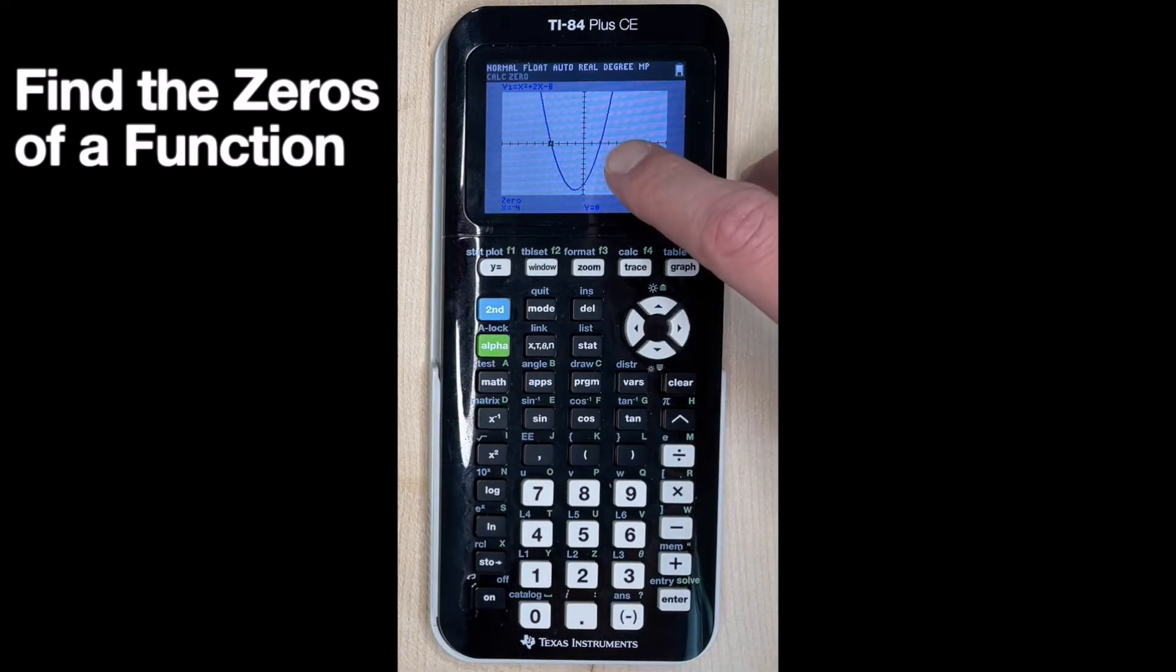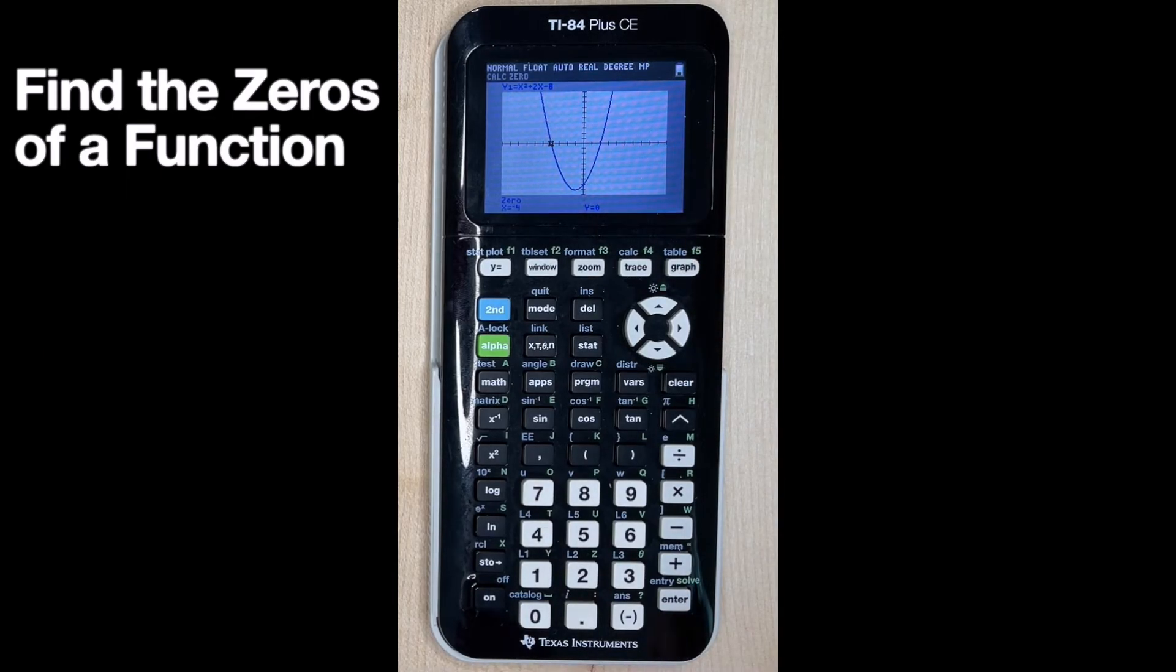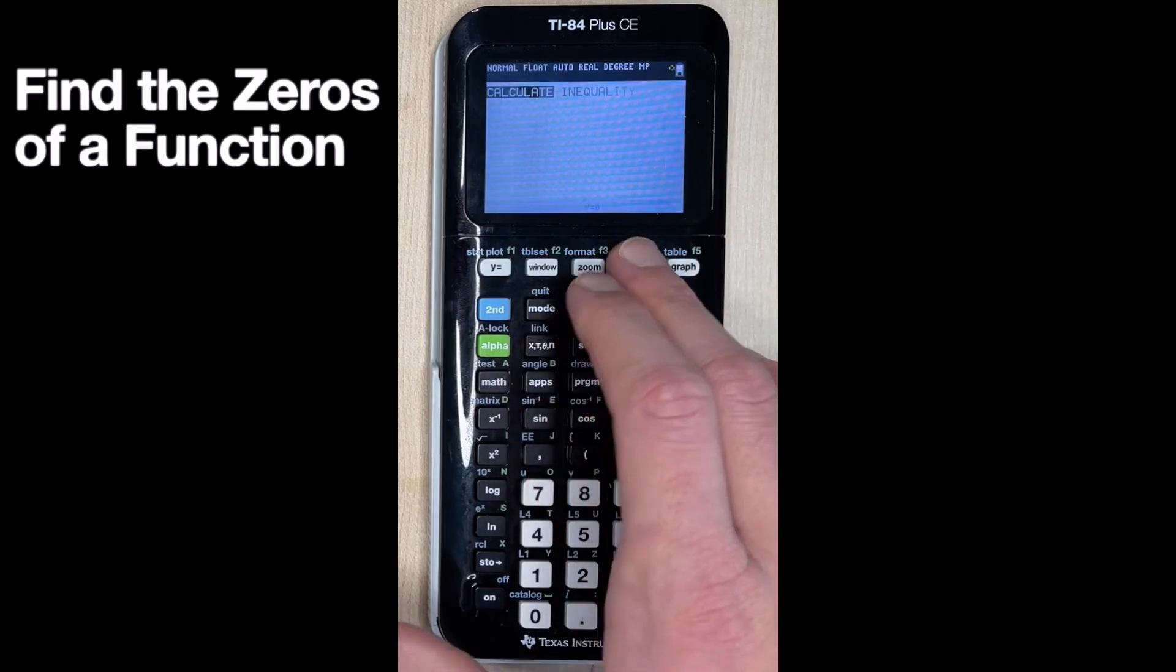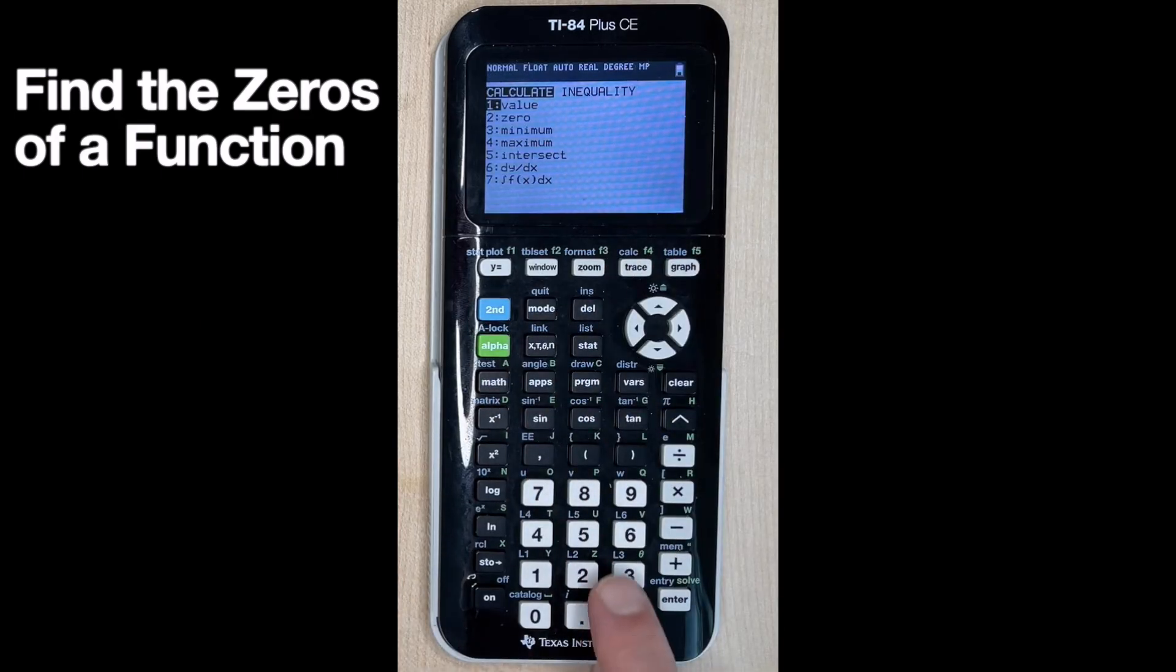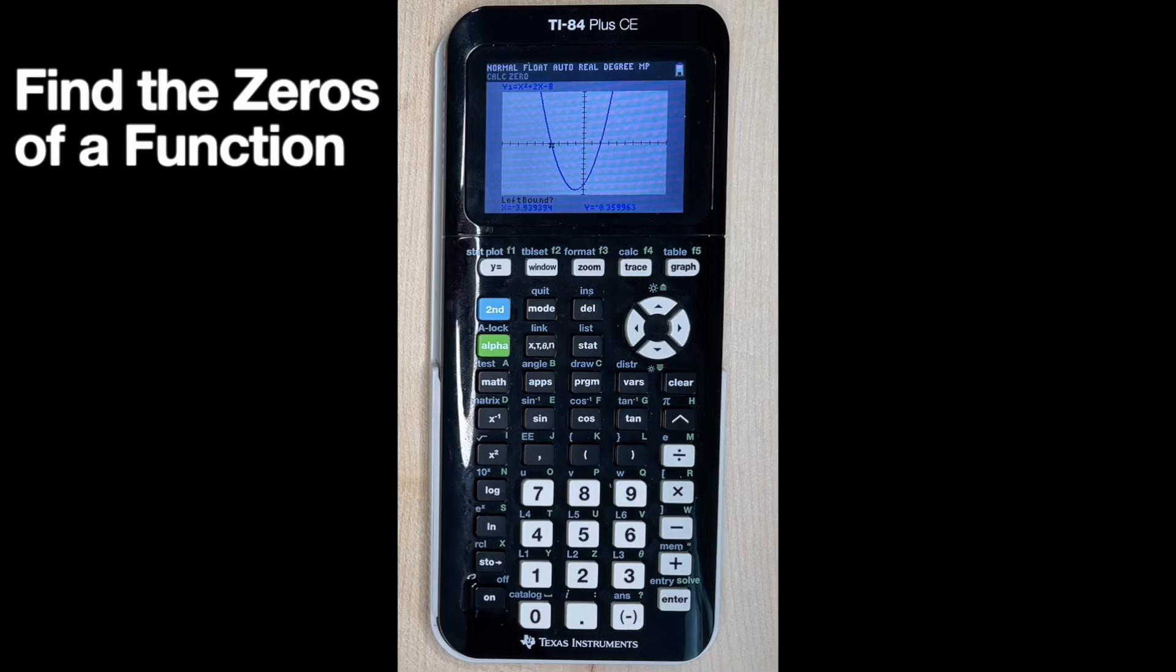Well, if you notice, we have another zero over here. So we just need to repeat that process. Let's do second trace to get calculate. Let's hit the number two, because we want to find the zero or the intercept of this function. But now we want the intercept that's on the right side. So we need to move our cursor. Still says left bound. So now we want our cursor to be below this x-intercept. We hit enter.